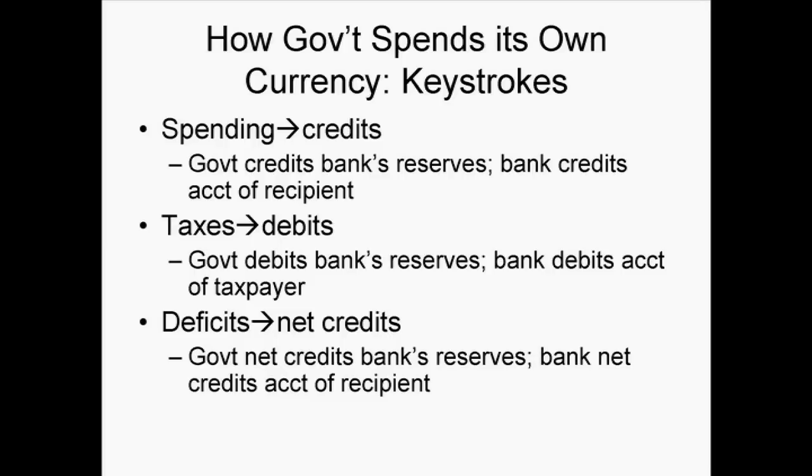When the government wants to buy something or make a transfer payment — a social security payment — it credits a bank's reserves and the bank credits your demand deposit, all electronically. That's the way modern states spend; they are spending their own money unit into existence. Taxes just reverse that: the government debits your bank's reserves and the bank debits your account. So it's credits and debits, and banks are sort of like our scorekeepers.